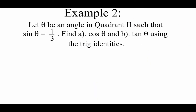Taking a look at these next couple examples, we're going to revisit some of those trig identities that we talked about at the end of 4.3. We've got theta being a second quadrant angle. We know that the sine of theta is 1/3, and we're going to use our trig identities to help us find the cosine and the tangent.